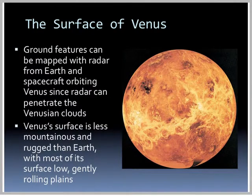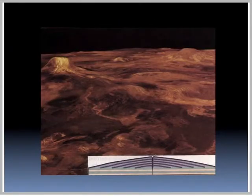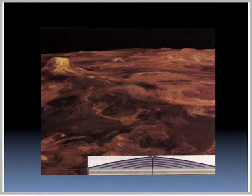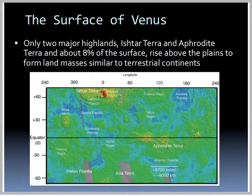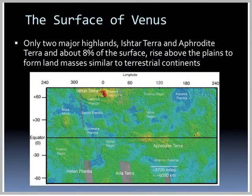Ground features of Venus can be mapped with radar from Earth and orbiting spacecraft, since radar can penetrate the clouds. Venus's surface is less mountainous and rugged than Earth, with most of its surface as low, gentle, rolling plains. A computer-generated image from orbiting satellite topography shows some hills and volcanic-looking structures, but basically low, smooth plains. There are only two major highlands — Ishtar Terra and Aphrodite Terra — and about 80% of the surface rises above the plains to form landmasses similar to our continents. If Venus had water, it would be mostly ocean with just these two small landmasses.